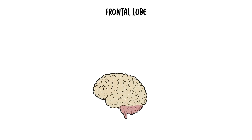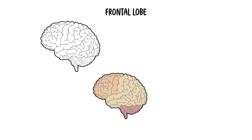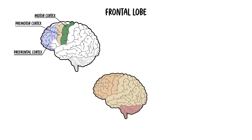As the name suggests, the frontal lobe lies underneath the frontal bone and is the most anterior region of the cerebrum. It is the largest lobe of the cortex and contains the prefrontal cortex, premotor cortex, primary motor cortex, and Broca's area.